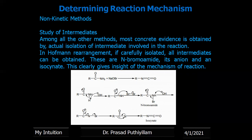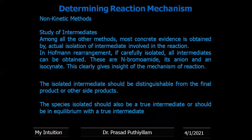In Hofmann rearrangement, N-bromamide and its anion, as well as isocyanate, are intermediates that can all be isolated and analyzed. However, the isolated intermediate must be distinguishable from the final product or any side product formed, and the species isolated should be a true intermediate or should be in equilibrium with a true intermediate. If the intermediate has less stability, it cannot be isolated and this method cannot be used to propose the reaction mechanism.